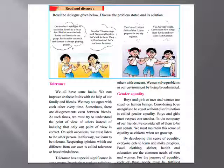In tolerance, we all have some faults — that is, disadvantages. We are not always agreeing with everybody, but we can improve these faults with the help of our family and friends. We may not agree with each other every time. Sometimes there are disagreements even between friends. At such times, we must try to understand the point of view of others instead of insisting that only our point of view is correct. On such occasions, we must listen to each other. In this way, we learn to be tolerant.